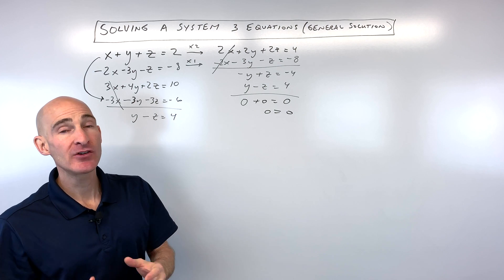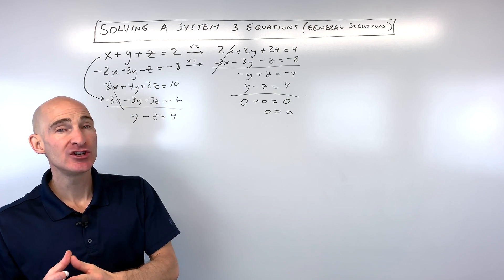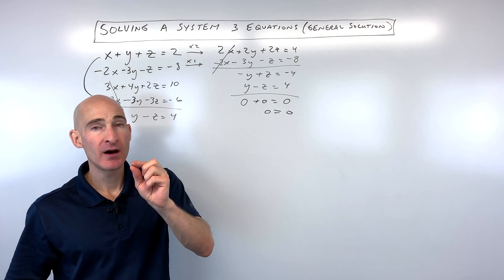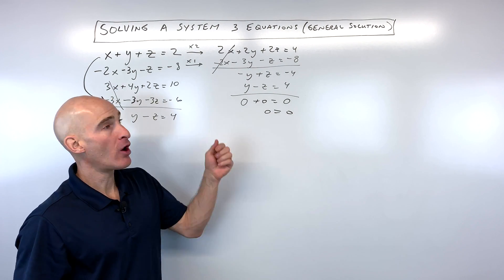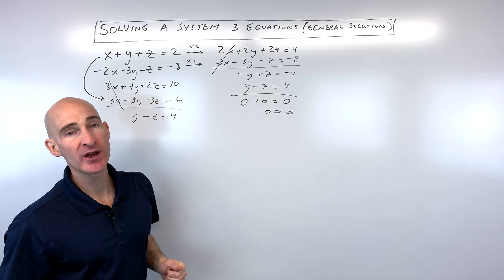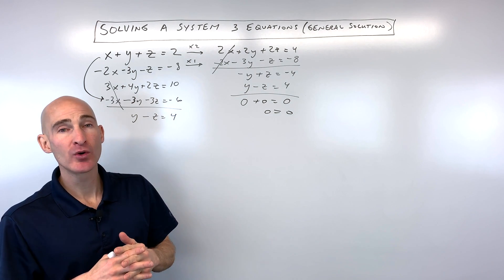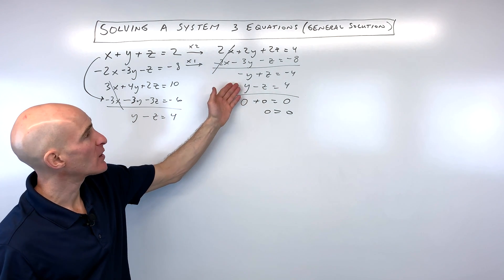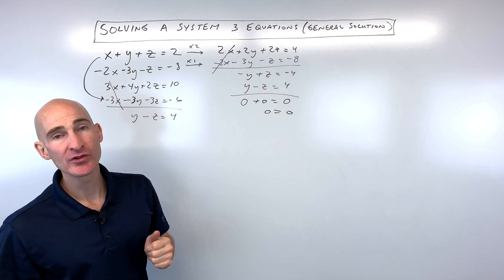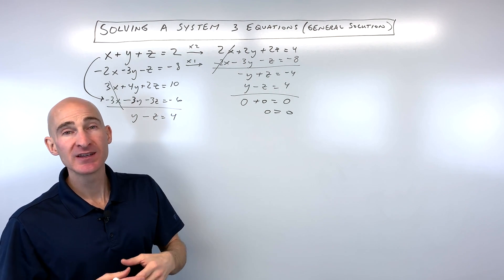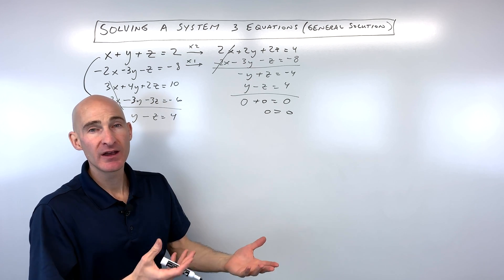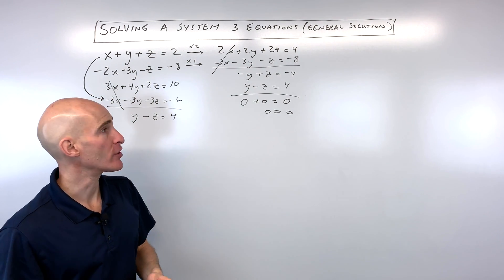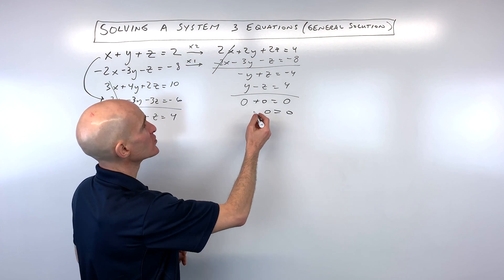This is what's called an identity — these equations are identical. That tells us we have a general solution; it's not just going to be one single point where all three equations coincide or intersect. So at this point we pick one of the variables and set it equal to another variable, like 'a'.